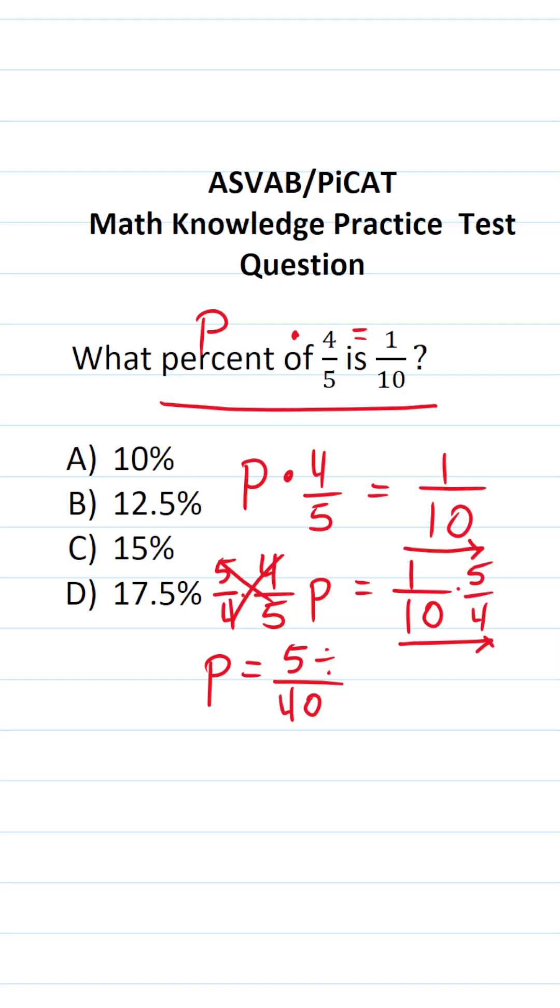We can reduce this fraction by a common factor of five. Five divided by five is one. Forty divided by five is eight. So one-tenth is one-eighth of four-fifths.